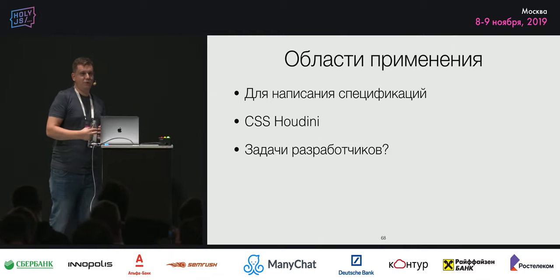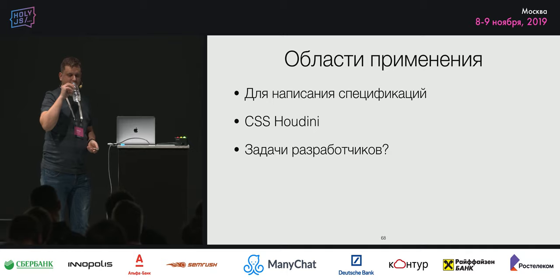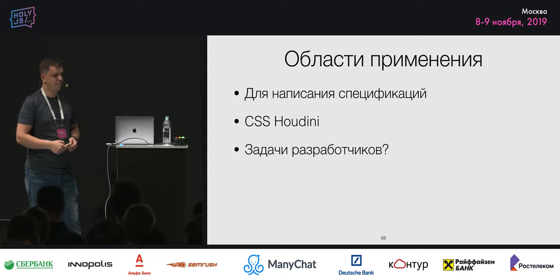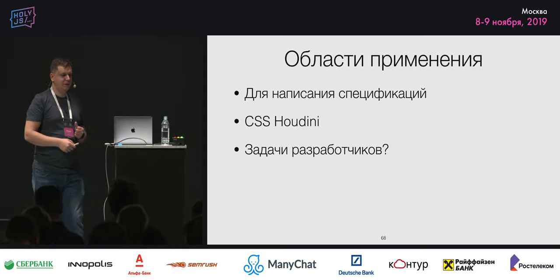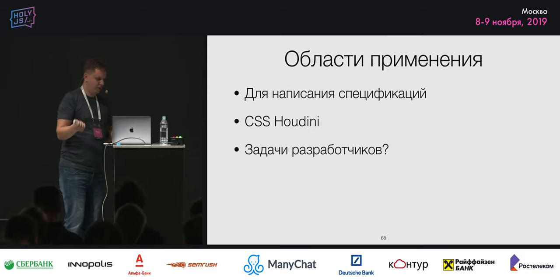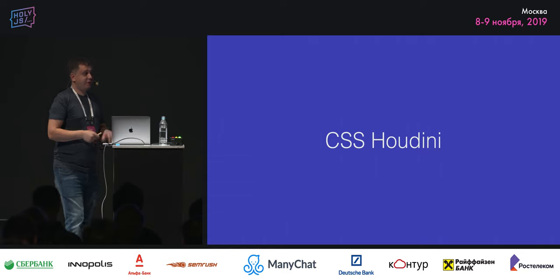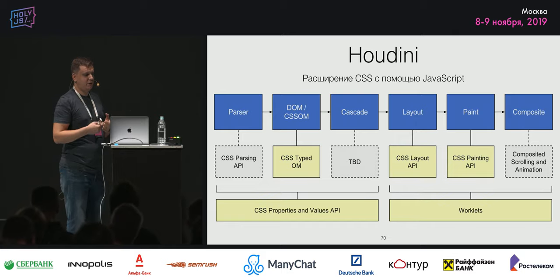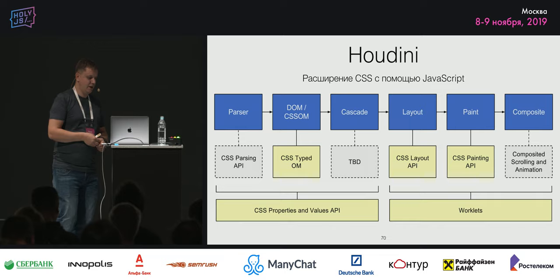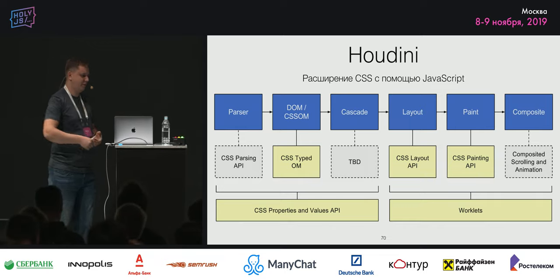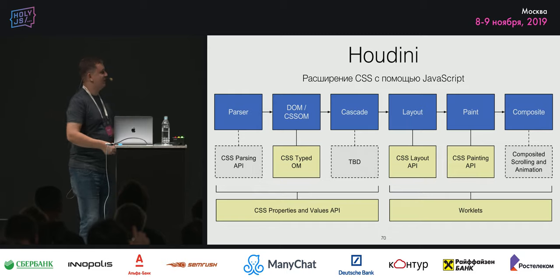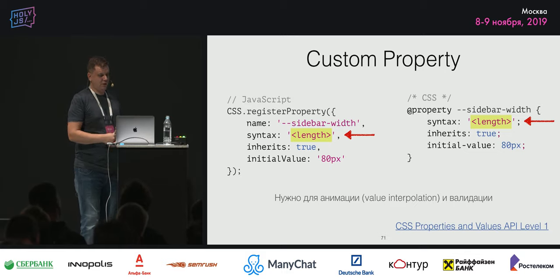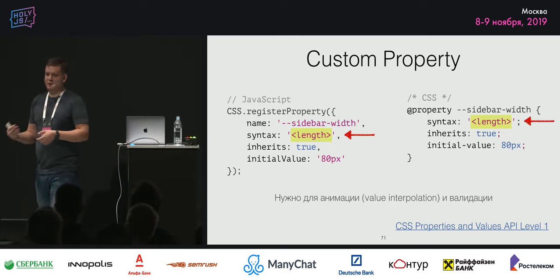Этот синтаксис используется для того, чтобы описывать сам CSS — используется в спецификации. Также используется на данный момент и начинает использоваться CSS Houdini. И кажется, что мы могли бы использовать для каких-то наших прикладных задач, когда разрабатываем frontend. Про спецификации всё понятно. Давайте посмотрим на CSS Houdini. Кто не знаком: это штука, которая состоит из нескольких спецификаций и позволяет расширять CSS с помощью JavaScript. Опять видите — здесь у нас отсылка к тому, что мы на JavaScript-конференции. И где-то это может использоваться для задания синтаксиса для custom property.